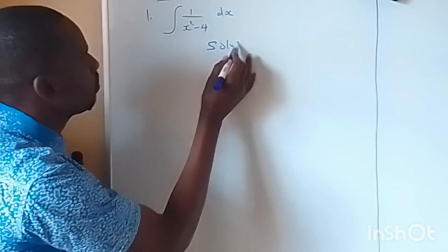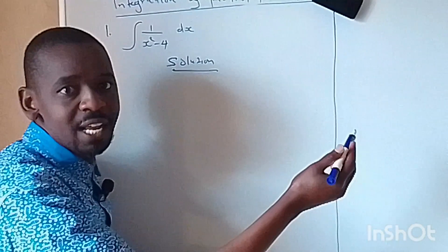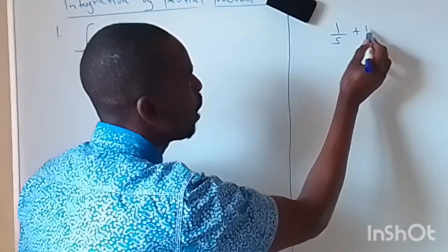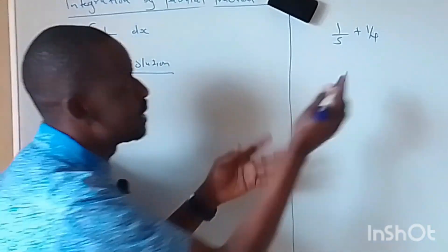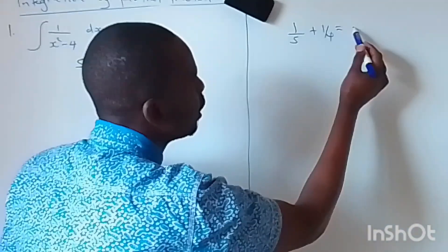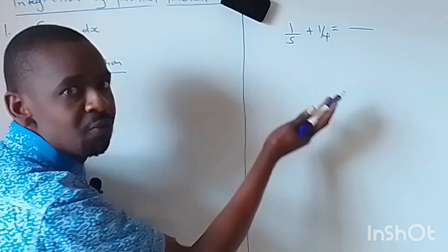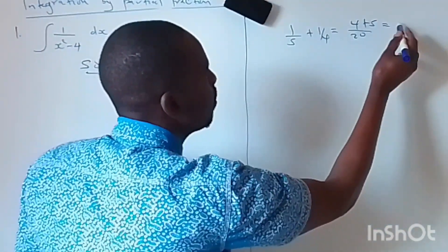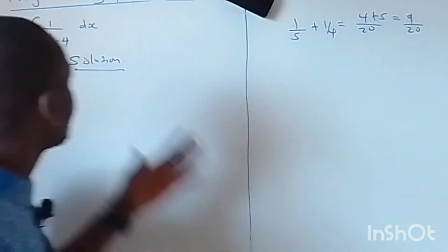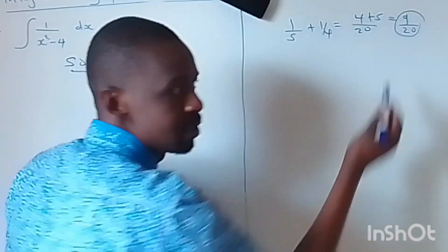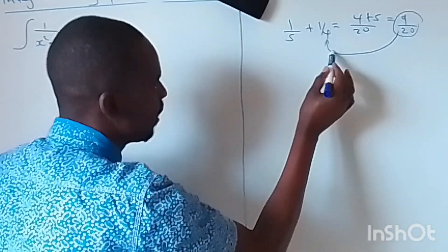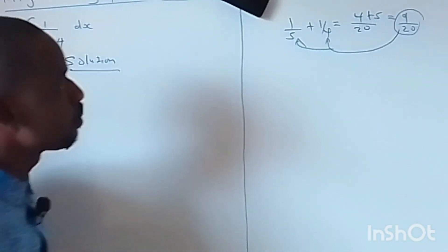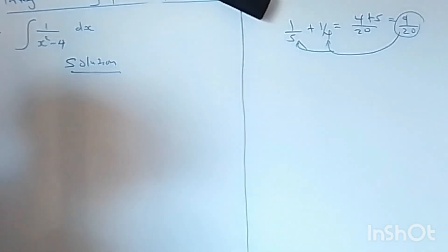Before we look at the solution, I want us to remind ourselves of something. If you have a fraction, for example 1 over 5 plus 1 over 4, then if you combine the two, you find the LCM of 5 and 4, which is 20, and you get 9 over 20. So in a partial fraction, we have a single fraction and we want to decompose it back into two different parts. That is what we want to apply here.